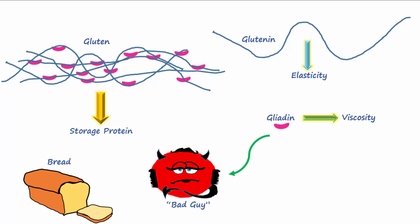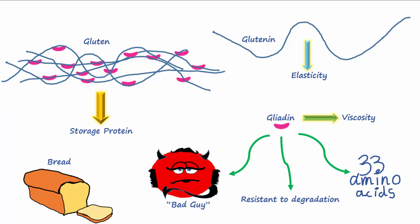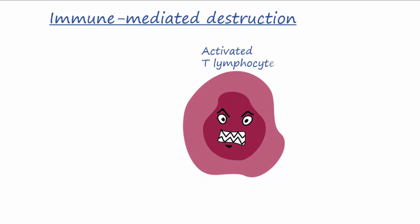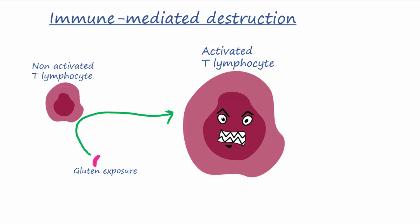Gliadin is the bad guy that triggers the immune response in genetically sensitive individuals. It is a polypeptide of 33 amino acids in length and is a fraction of the gluten molecule particularly important in the pathogenesis of celiac disease. Gliadin is resistant to degradation by gastric pepsin and proteases in the small intestine. The destruction in the digestive tract is immune system mediated, caused mostly by T-cells activated when sensitive individuals are exposed to gluten, attacking enterocytes lining the digestive tract.